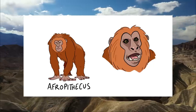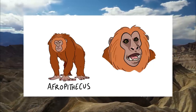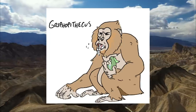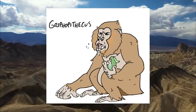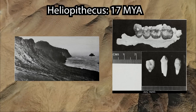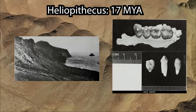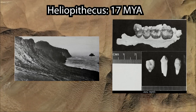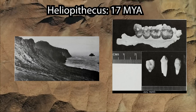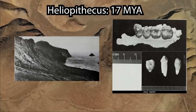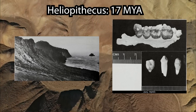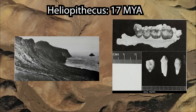Afropithecus, our monomorphic sclerocarpic feeder, is thought to have given rise to the Griphopithecins, a group of strong-jawed apes that would be the very first out of Africa. Heliopithecus is the oldest ape found outside of geopolitical Africa at 17 million years ago, calling Ad Dabtiyah, Saudi Arabia, home. Not much can be attributed to this ape, but the dental material found is a dead ringer for an ancient hominoid.